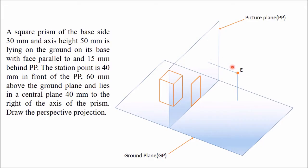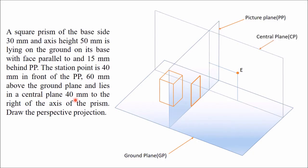The station point is at a distance of 40mm in front of the picture plane, and 60mm above the ground plane. The central plane is perpendicular to both the picture plane and the ground plane, and contains the observer's eye or station point. This central plane is at a distance of 40mm from the center or axis of the prism. The top view of the observer's eye is represented as small 'e', and the front view as 'e-dash'; e-dash to e is 40mm, and e to ground is 60mm.